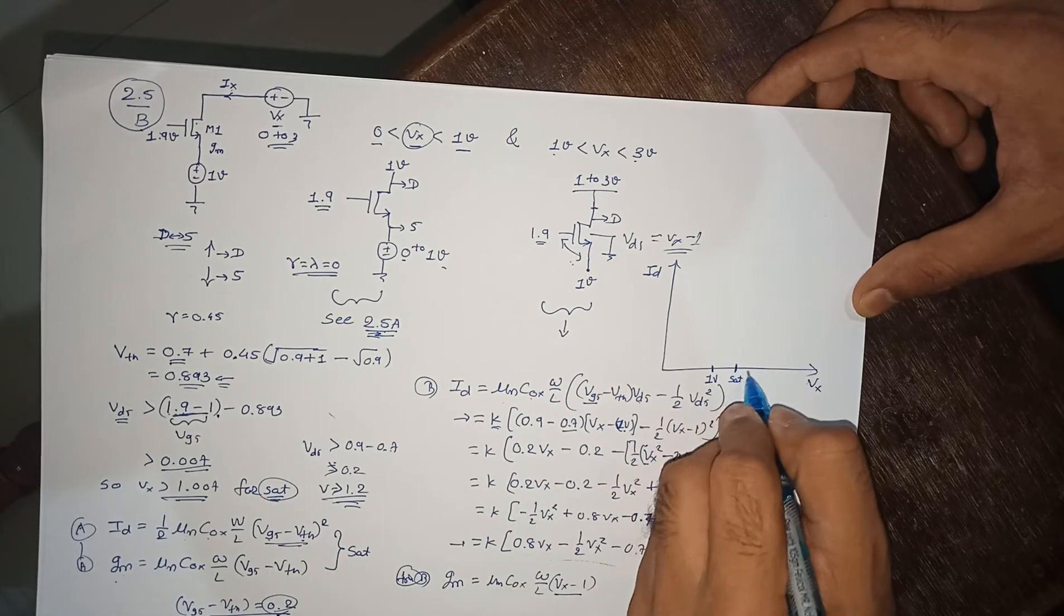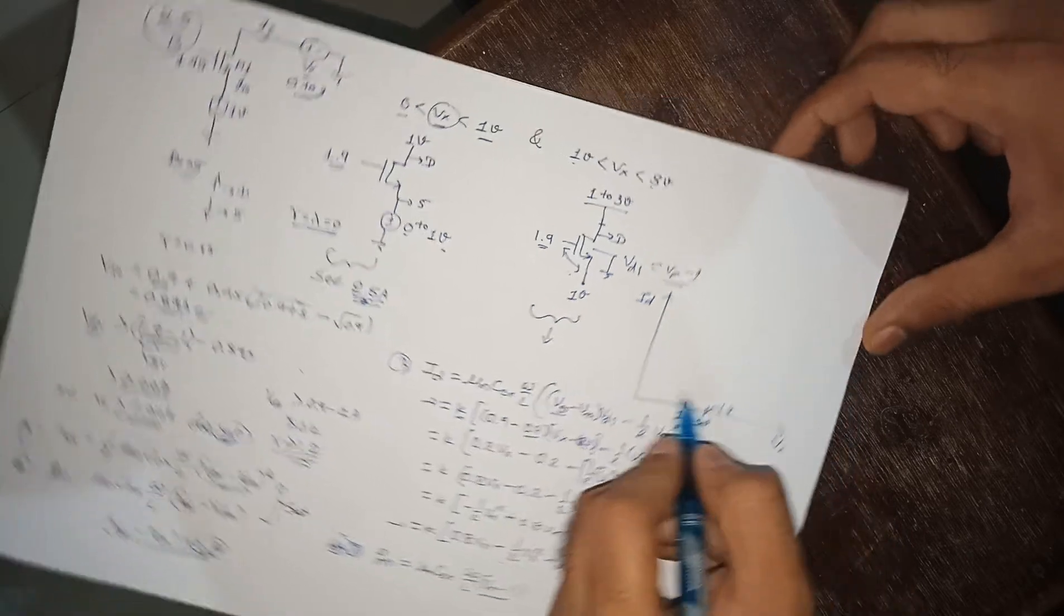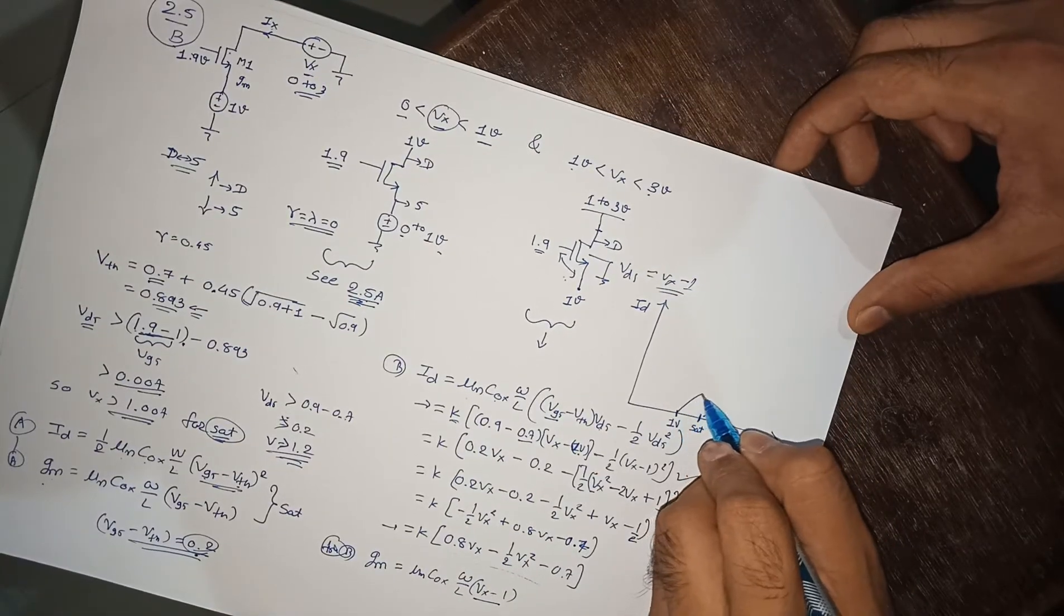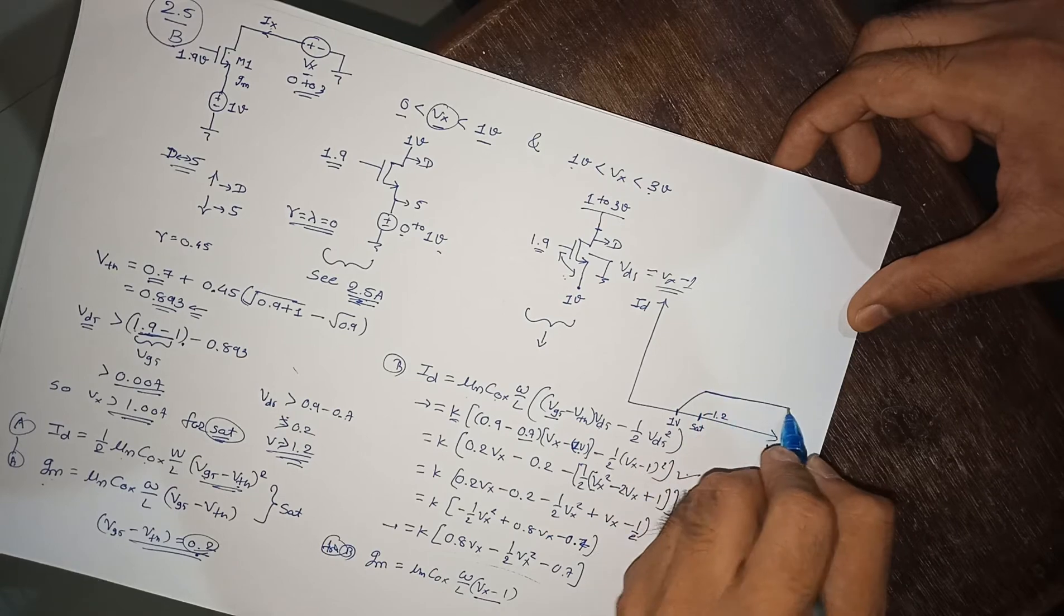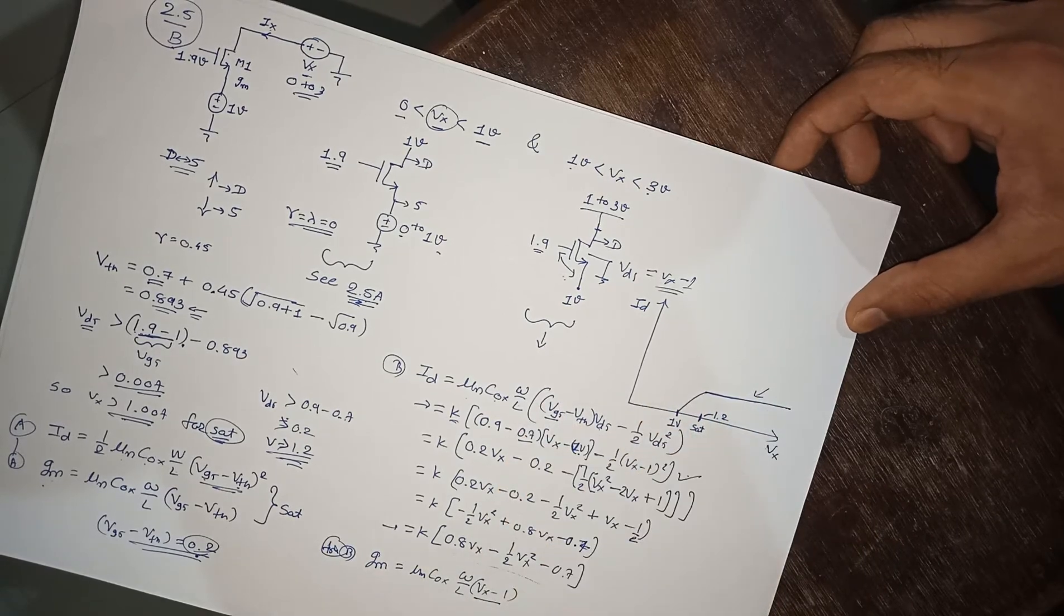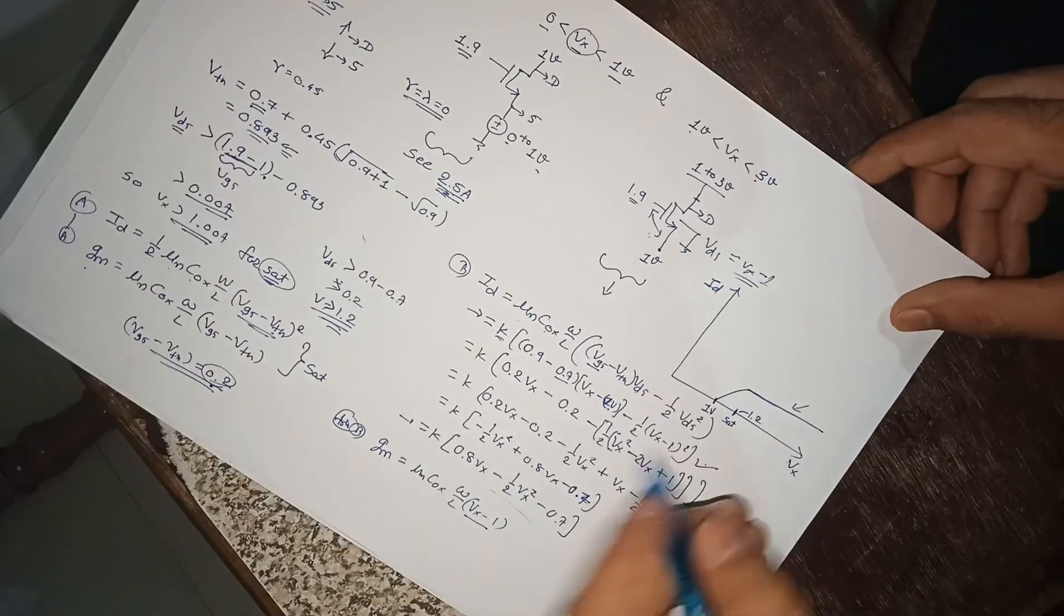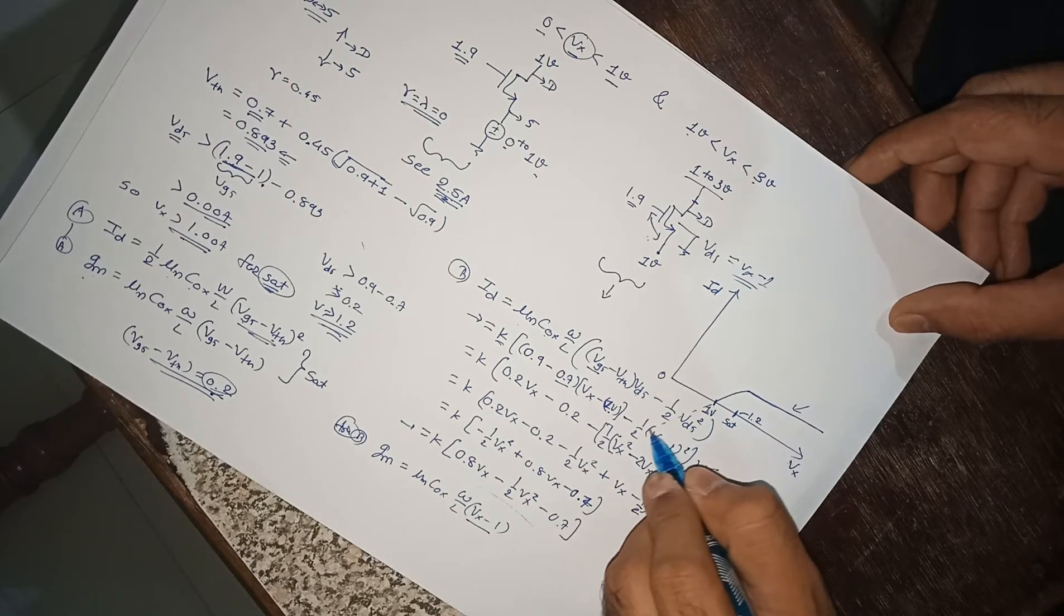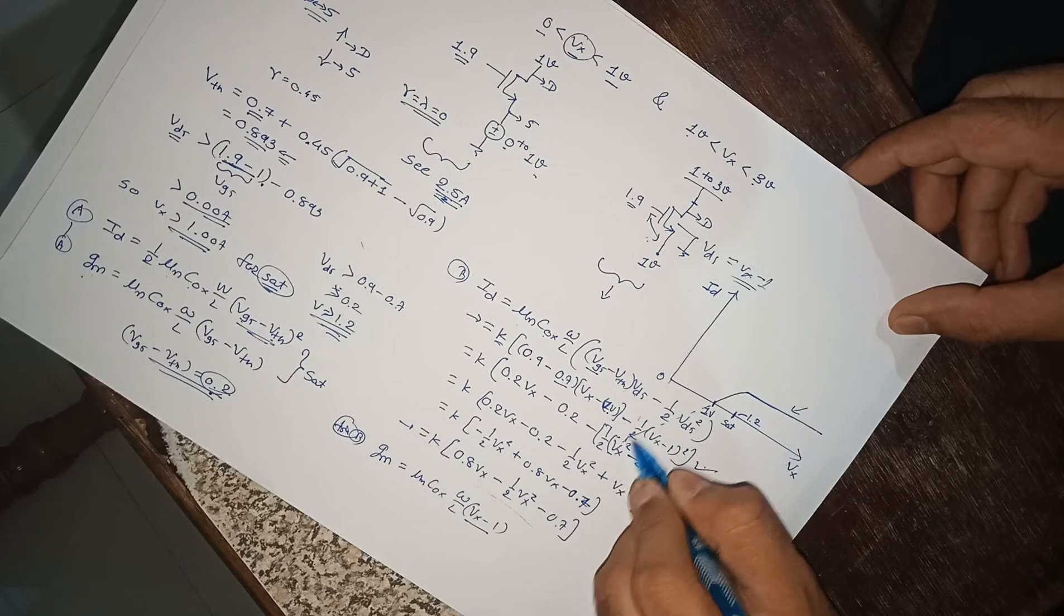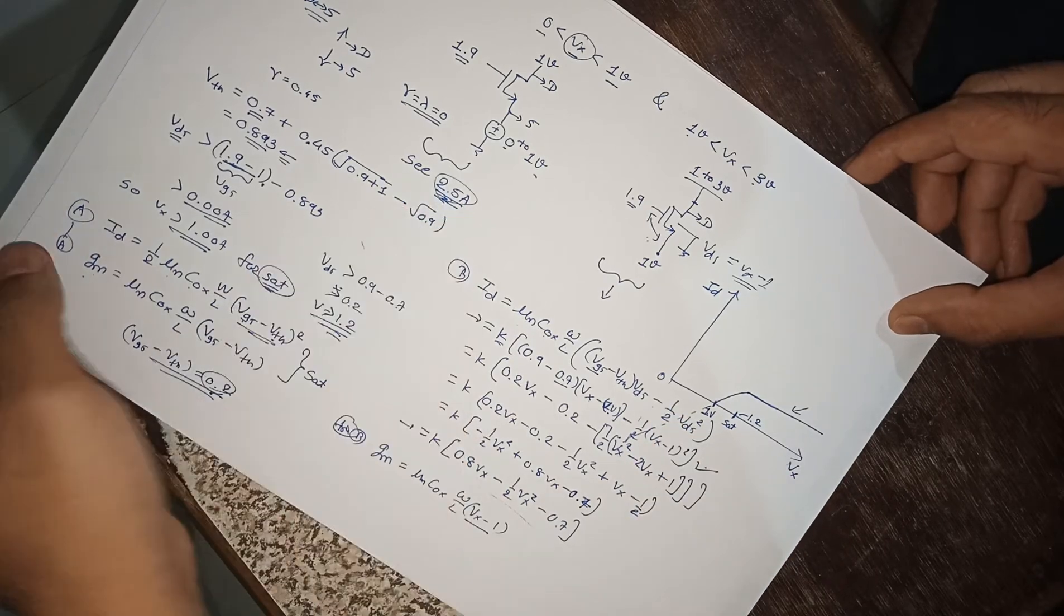Up to that it will follow like this, and after this it will be a straight line if you're not considering the channel length modulation. From 0 to 1 volt it will follow the linear graph as shown in 2.5 part A.